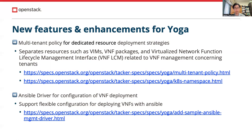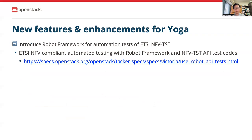TAKA has provided configuration of VNF deployment using a shared script called user data, but it is not sufficient for more complex use cases. This feature adds support for such use cases with Ansible. The last highlight is the introduction of the Robot Framework for automated testing of ETSI NFV-TST. It is an automated testing framework defined in the ETSI NFV-TST group for maintaining high interoperability among components. These tests run on Zuul as a set of functional test scenarios.